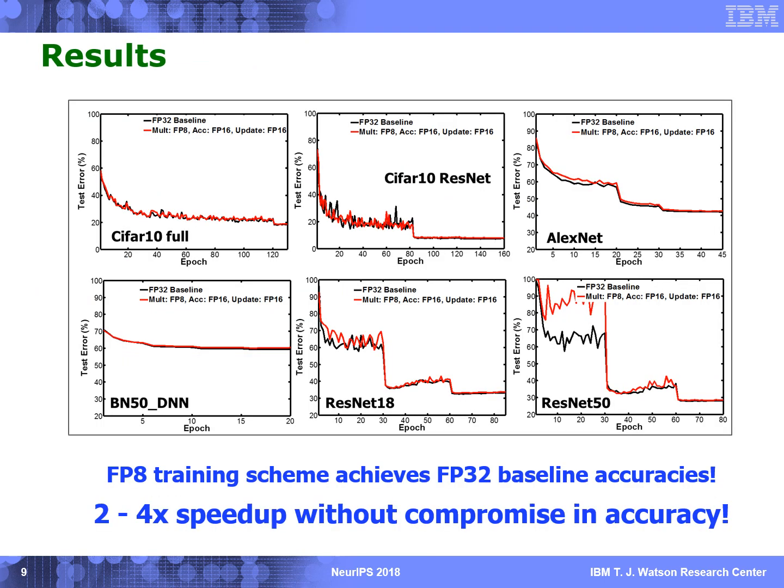We apply these techniques to popular networks and datasets. All the models tested converge to the FP32 baseline with 8-bit representation and 16-bit accumulation and updates. With this gain, we can achieve 2 to 4 times speed-up over today's best DNN training platforms.